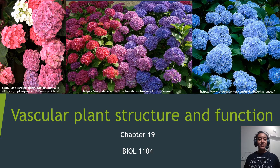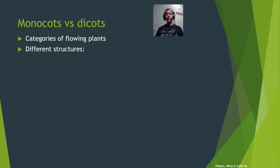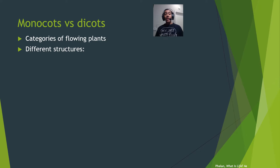This is chapter 19 in your textbook. In our last lecture, we talked about angiosperms — our flowering plants — their reproduction, structure, and the different parts of the flower. Now we're going to talk about the two categories of angiosperms: monocots and dicots, which have different structures.